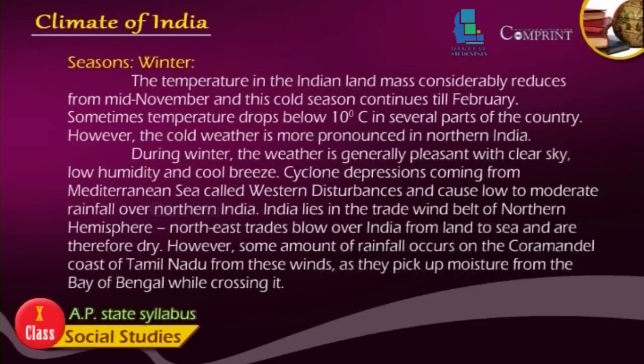India lies in the trade wind belt of the northern hemisphere. Northeast trade winds blow over India from land to sea and are therefore dry. However, some amount of rainfall occurs on the Coromandel coast of Tamil Nadu from these winds, as they pick up moisture from the Bay of Bengal while crossing it.